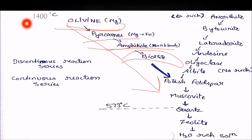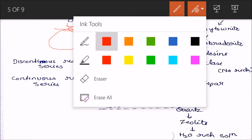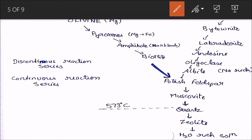All reactions start at around 1400°C. When olivine crystallizes and the temperature continues to cool down, olivine changes its structure and becomes pyroxene — first Mg-pyroxene, then Fe-pyroxene. When Fe-pyroxene is in the system and temperature still drops, it converts into amphibole, then into biotite, then into potash feldspar. Every time the structure itself is changing — that's why this is called a discontinuous series.